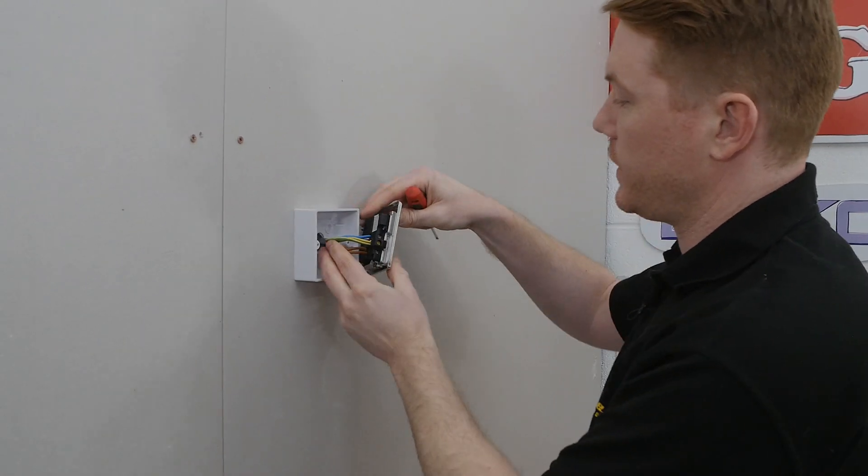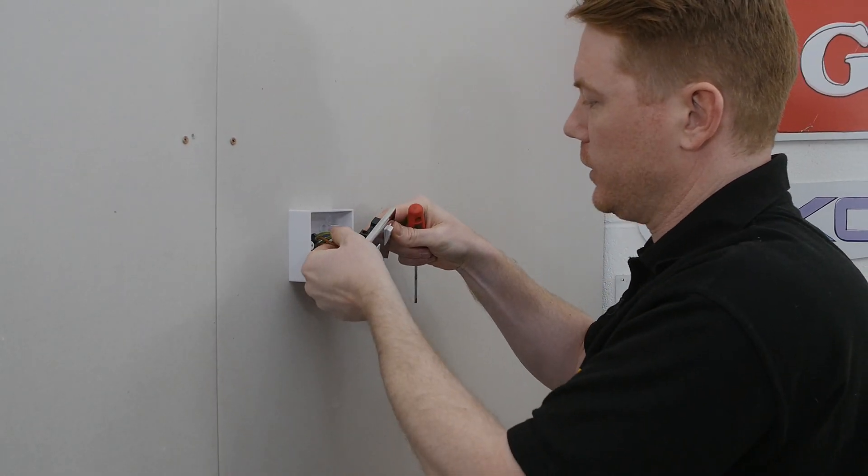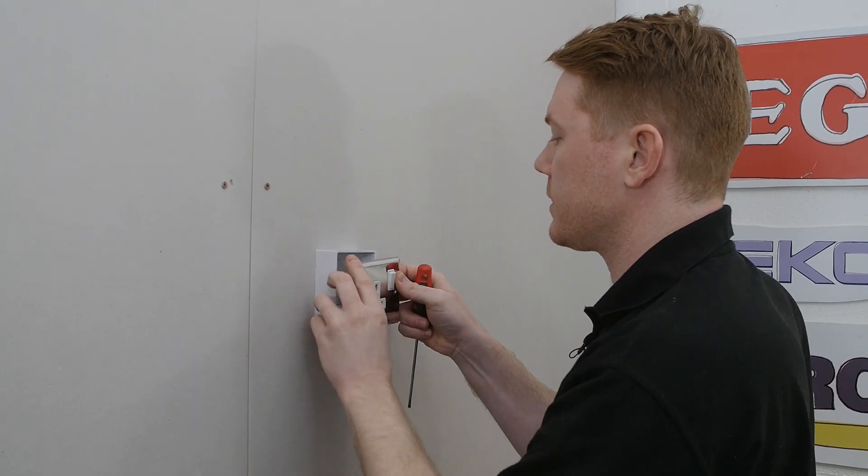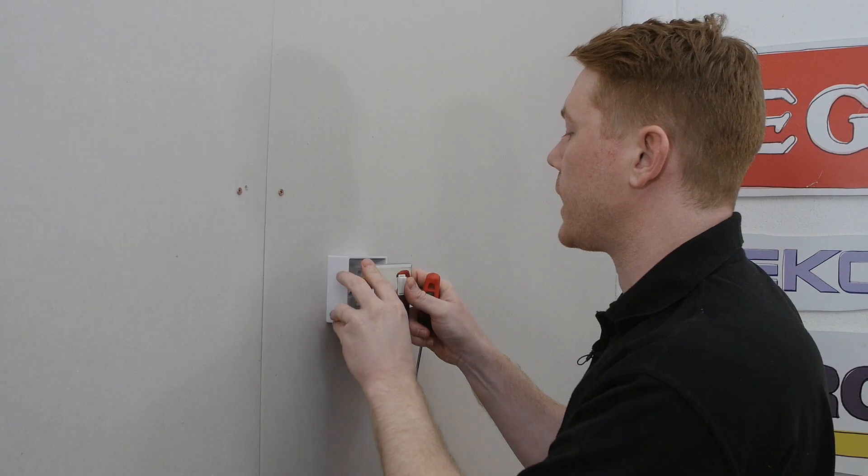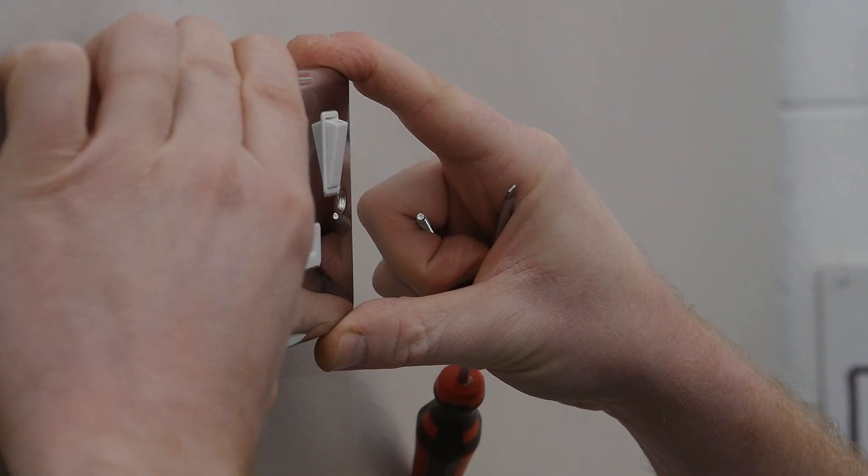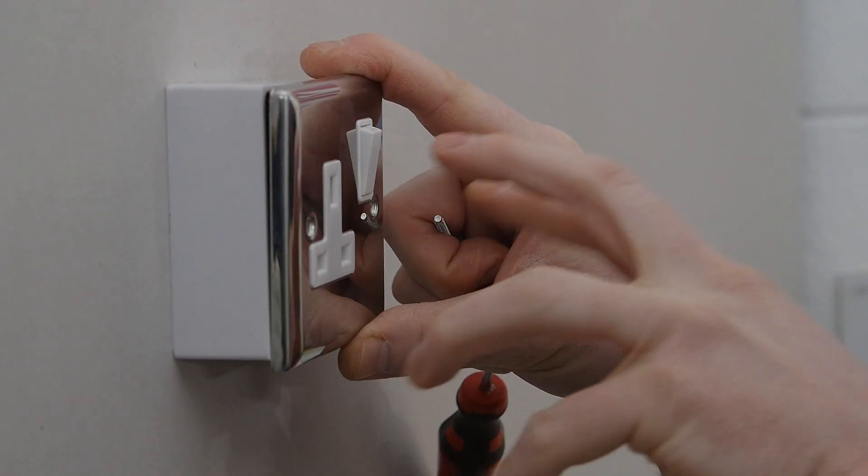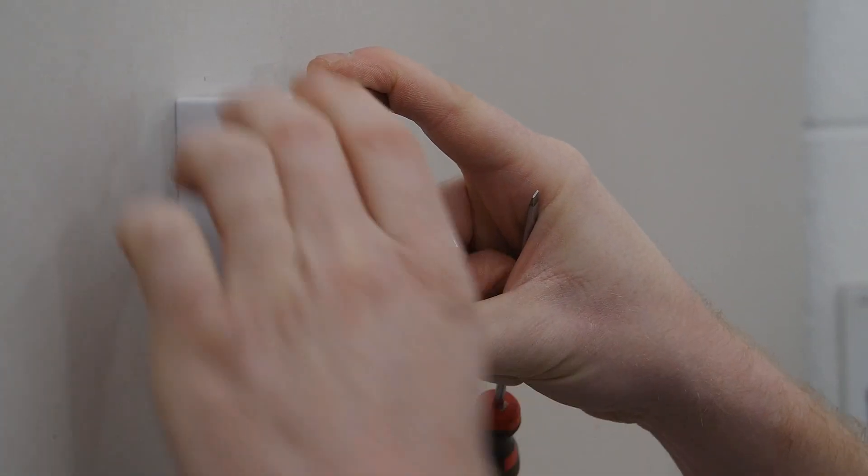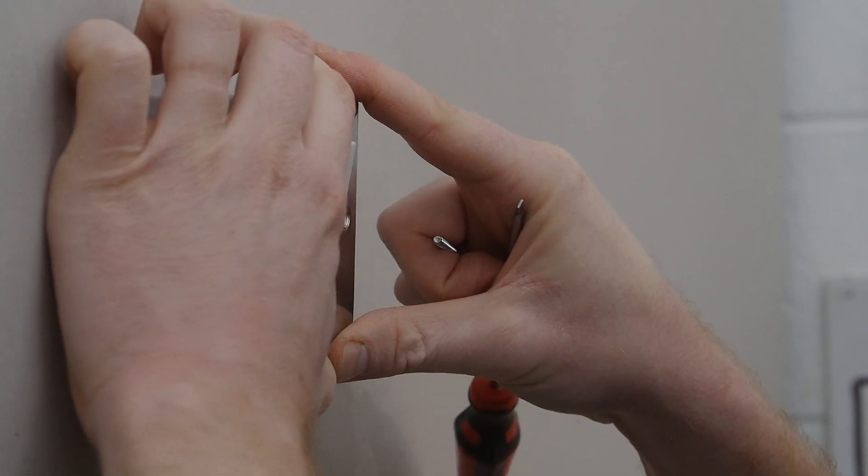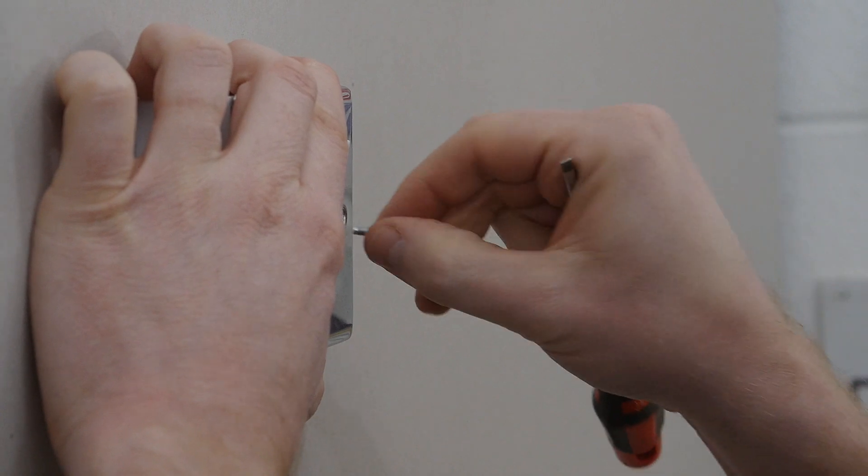Then it's just a case of feeding the wires back into the socket, making sure you don't pinch any, before screwing in the front socket plate. It's worth noting before I screw the socket front in place that the wires behind the socket front can be very stiff, so don't be afraid to shove the socket face into position before rescrewing.